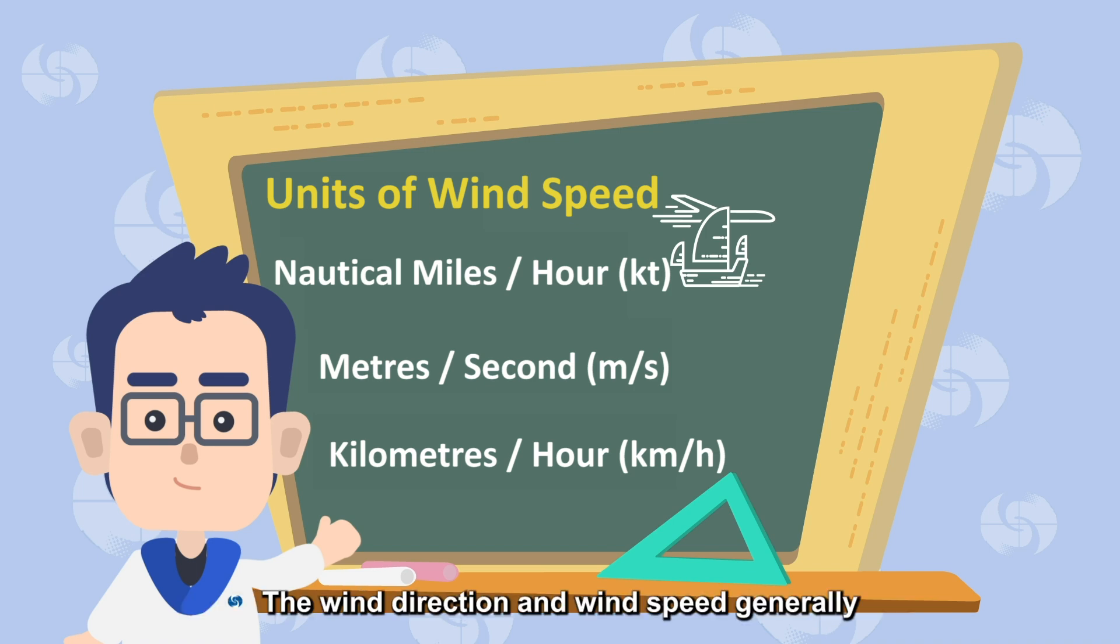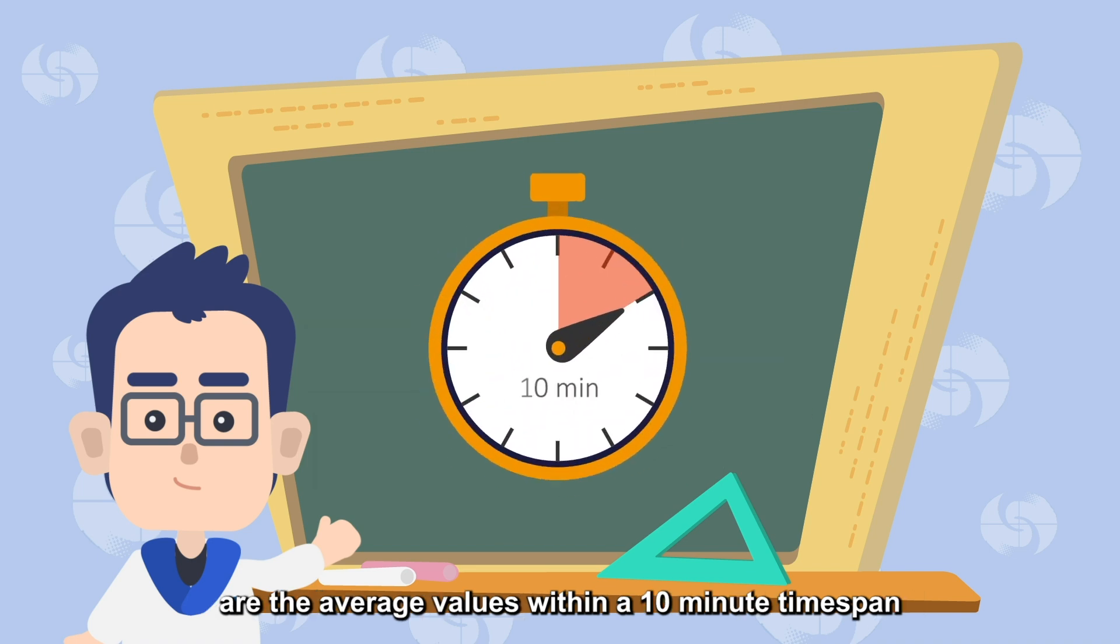The wind direction and wind speed generally take the average values within a certain observation period. In a weather report, the wind direction and wind speed are the average values within a 10-minute time span.